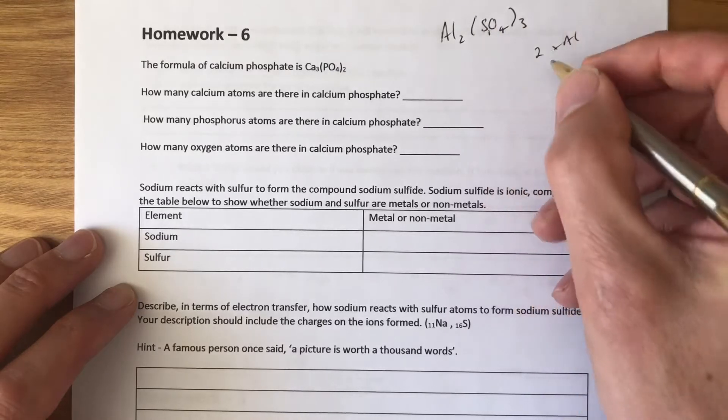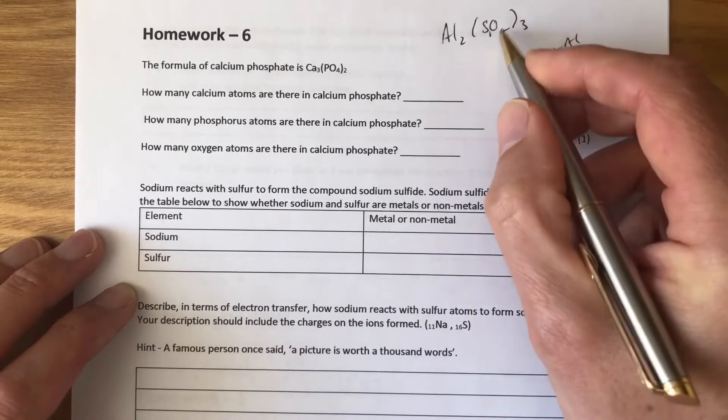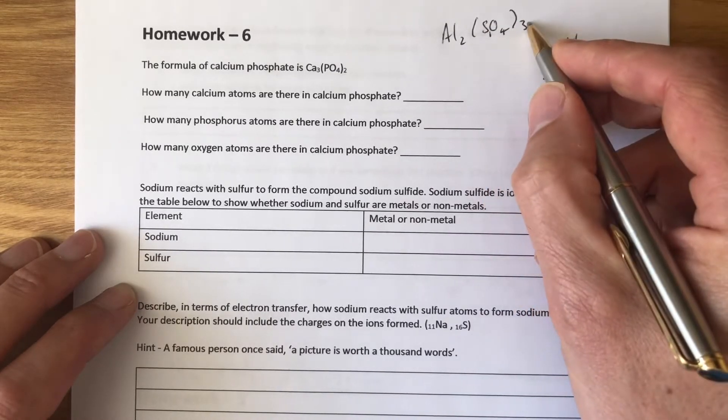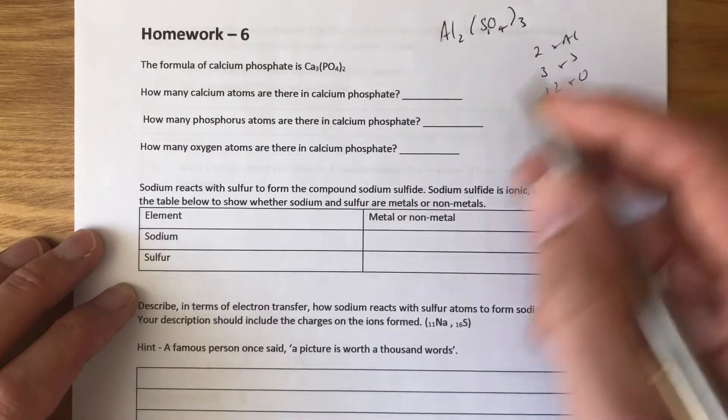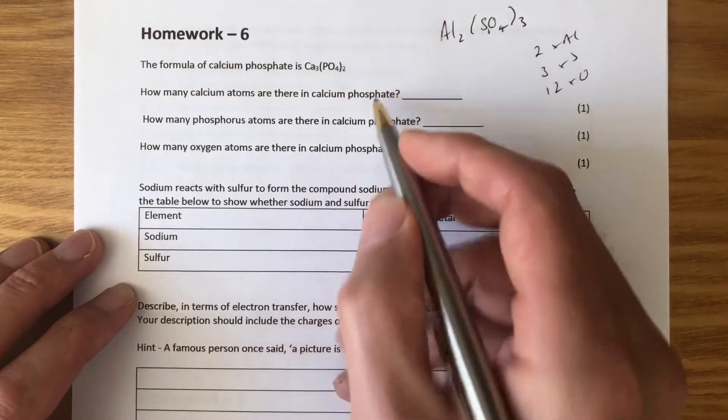S1. Sulfur one times three, so it's three times sulfur. And O4 in the brackets times three, four times three is twelve oxygens, twelve times oxygen. Okay, so you need to apply that to that example.